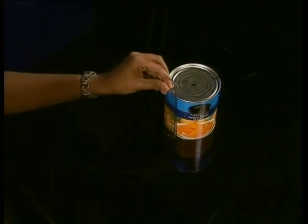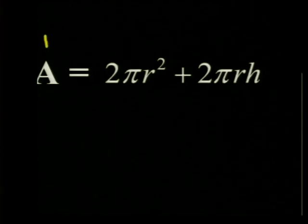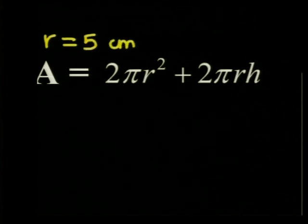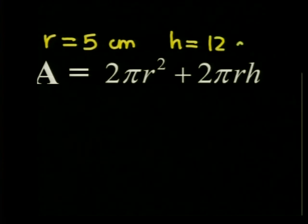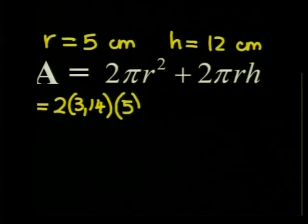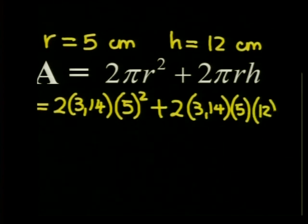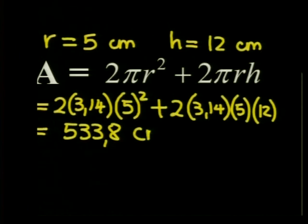Now using my ruler let's measure the height — on my can I get 12 centimeters. Now we have all the information we need to substitute into the formula. The radius is equal to 5 centimeters and the height is equal to 12 centimeters. Substituting these values in, we get: A equals 2 times 3.14 times 5 squared plus 2 times 3.14 times 5 times 12. So our total surface area is 533.8 centimeters squared.